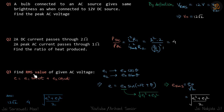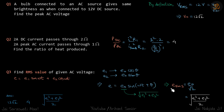Third problem: find the RMS value of the given AC voltage. We substitute E1 as E0·cosθ and E2 as E0·sinθ, and write this in the form E = E0·sin(ωt + θ), where E0 equals the square root of E1² + E2². This gives Erms equal to E0 divided by root 2, or the square root of (E1² + E2²) divided by root 2.